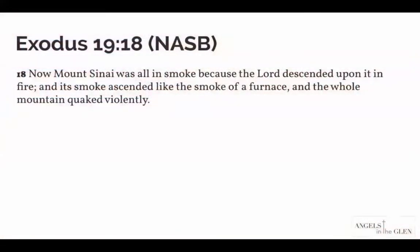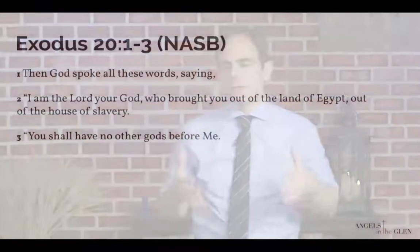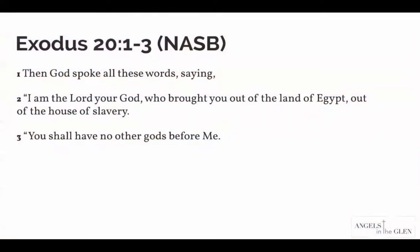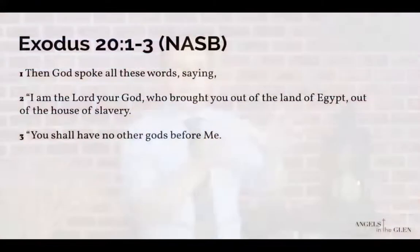Chapter 19, verse 18: 'Now Mount Sinai was all in smoke because the Lord descended upon it in fire, and its smoke ascended like the smoke of a furnace, and the whole mountain quaked violently.' Then in Exodus 20 verses 1 through 3, God speaks the Ten Commandments: 'I am the Lord your God who brought you out of the land of Egypt, out of the house of slavery. You shall have no other gods before me.' He brings them out of bondage and then establishes his law — bringing them to himself and establishing his law.